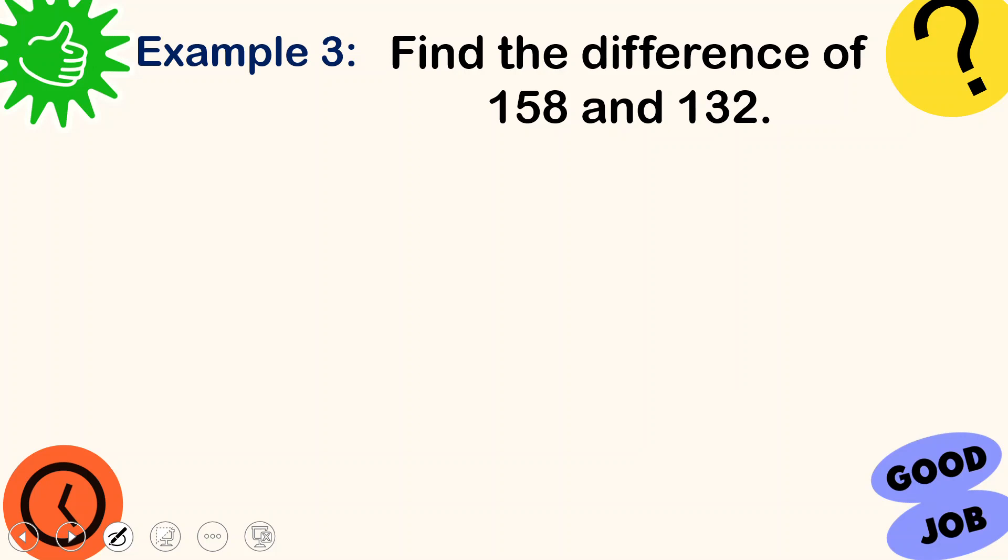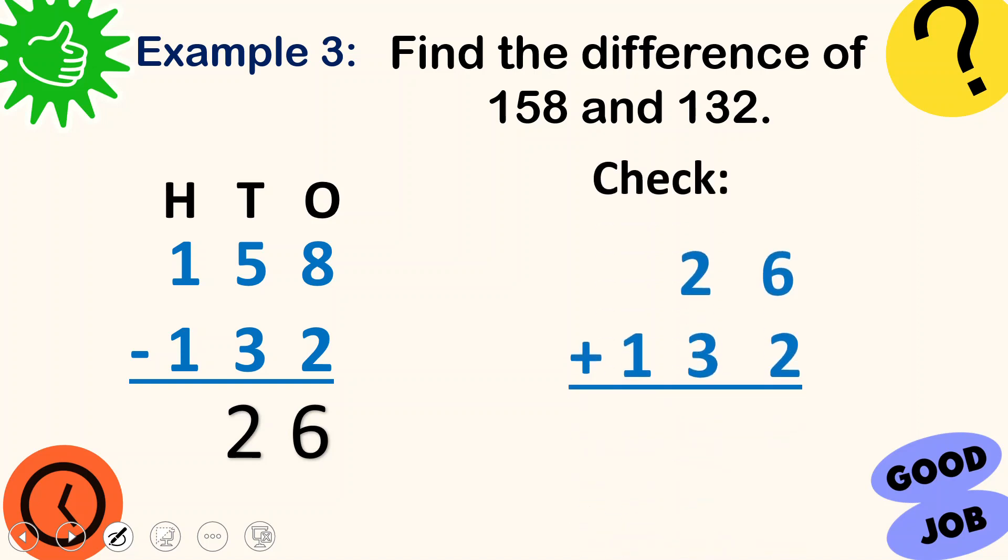Example number 3. Find the difference of 158 and 132. In here, you will just write it the normal way. 158 minus 132. Because there's no from. You can't see the word from. 8 minus 2 is 6. 5 minus 3 is 2. And then 1 minus 1. Since it's 0, you don't need to put 0 in the 100's place. So it's 26. Let's check. 6 plus 2. 8. 2 plus 3 is 5. And then nothing there. So we'll just put down 1 and see. 158. 158. They are the same. The sum and the minuend are the same. That means your answer is correct.